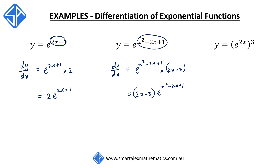Our last example is y is equal to e to the 2x cubed. First, we apply the index law to rewrite this as e to the 6x, and then we differentiate this expression. We get e to the 6x and multiply by the derivative of 6x, which is 6. So dy/dx will be 6 times e to the 6x.